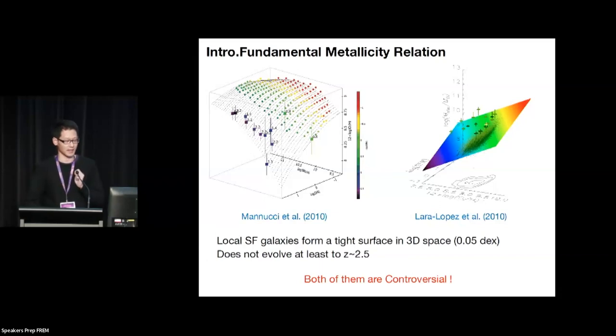And the most intriguing thing is that they find that this plane doesn't change through cosmic time. So this is why it is called the fundamental metallicity relation, because it never evolved. The observed evolution of the MZ relationship before is only when galaxies evolved through cosmic time, they just span different regions in this same plane, but the plane itself doesn't change at all.